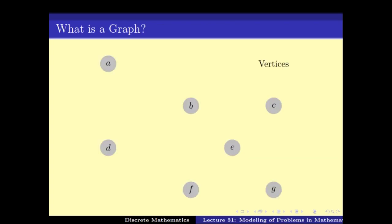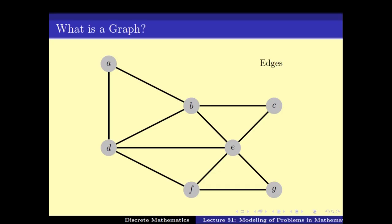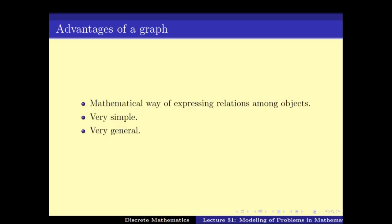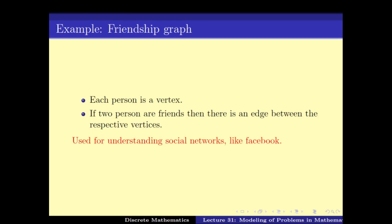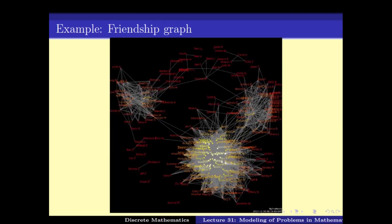Using this kind of structure, we can represent various problems. A very big advantage of a graph is that it is simple and very general. It is used for representing binary relations among objects. A typical example is a friendship graph, where every person is a vertex and if two persons are friends, there is an edge between the respective vertices.